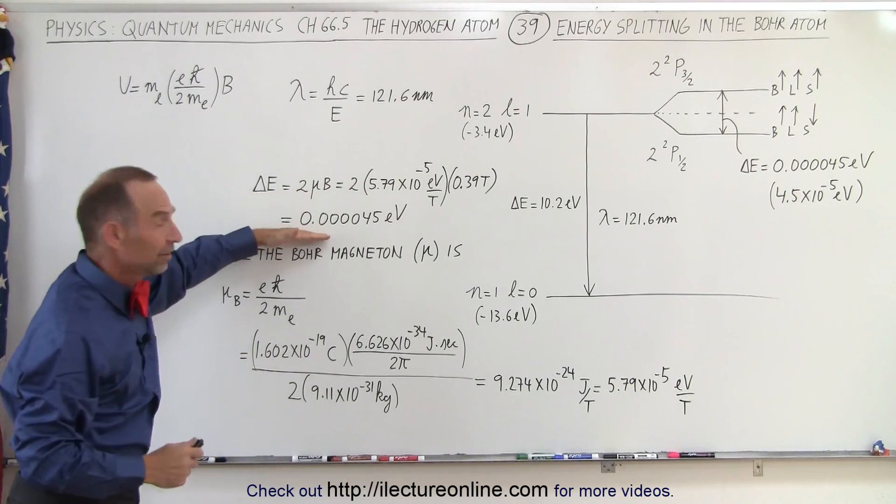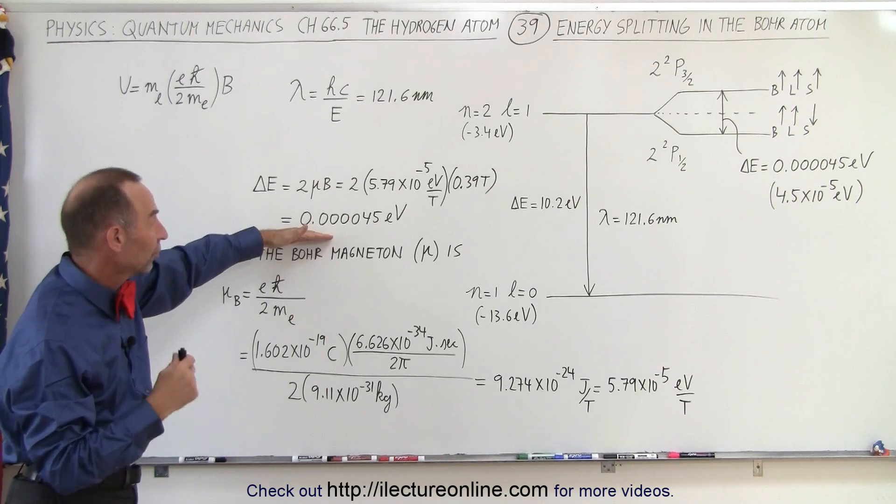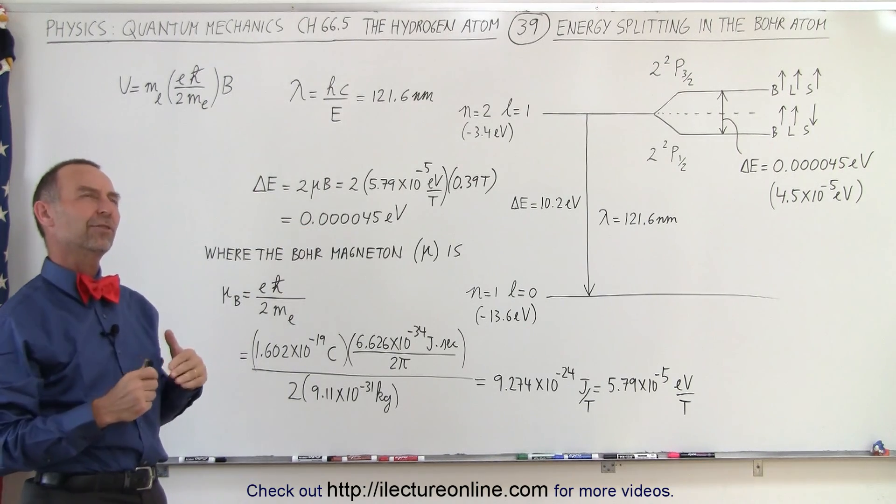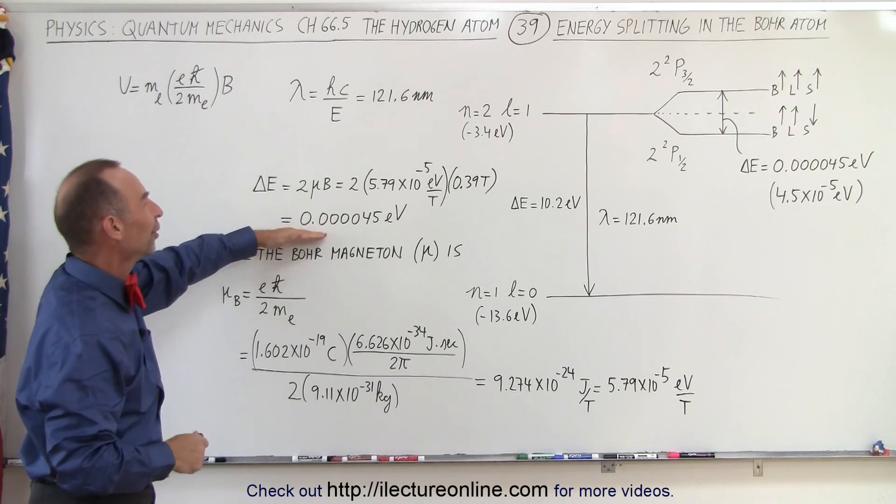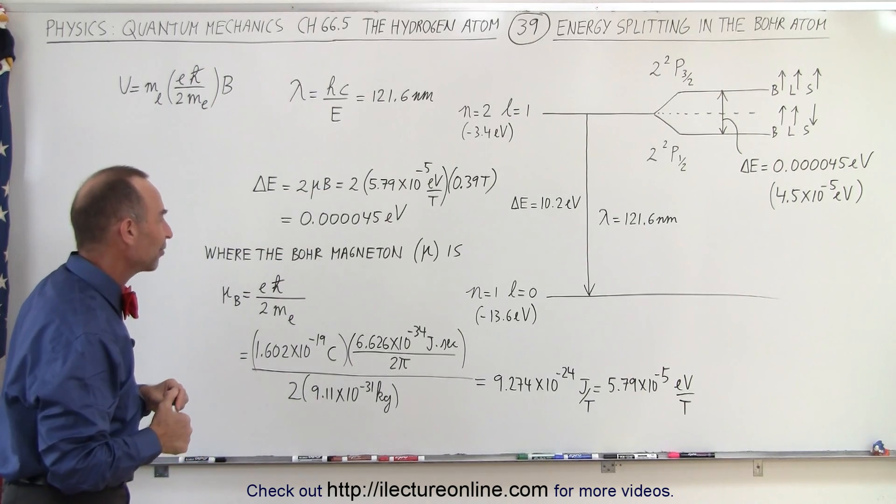When we multiply these numbers together, this is 0.000045 electron volts, or 4.5 times 10 to the minus 5 electron volts.